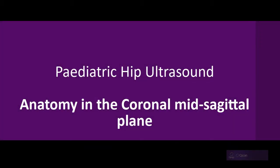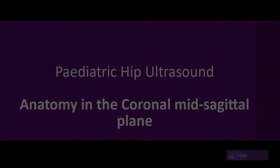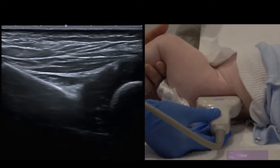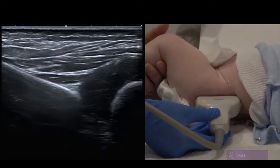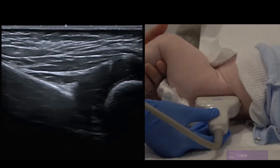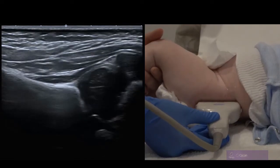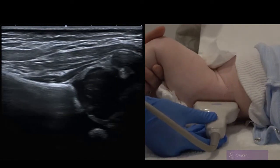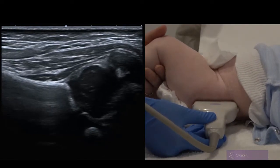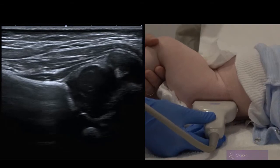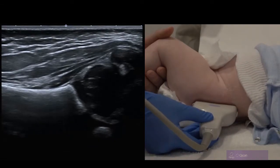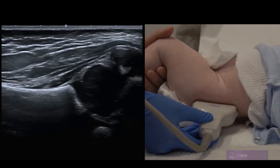This is the anatomy of the pediatric hip in a coronal mid-sagittal plane. We can see the transducer is initially quite anterior and not mid-sagittal. The ilium is sloped but then progressively becomes horizontal and parallel with the transducer as the probe is in the mid-sagittal plane.